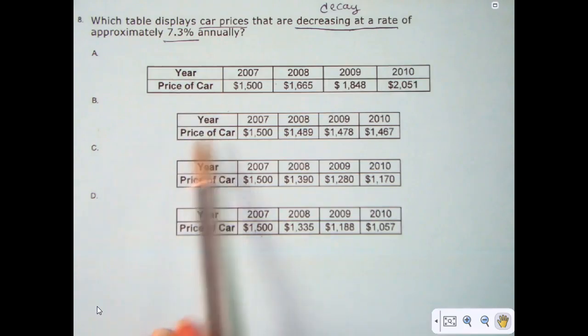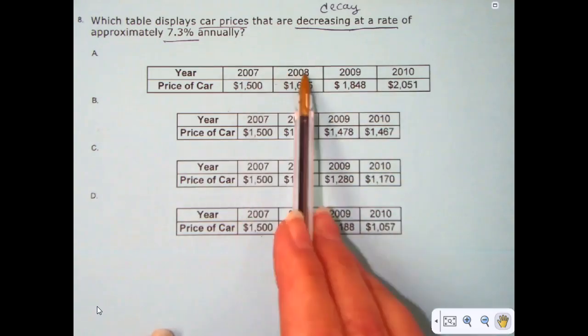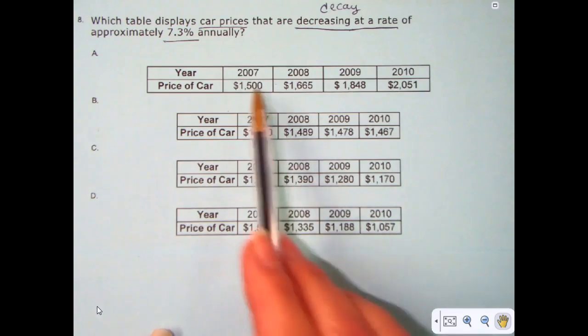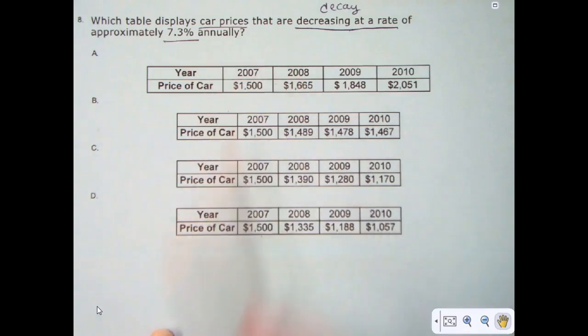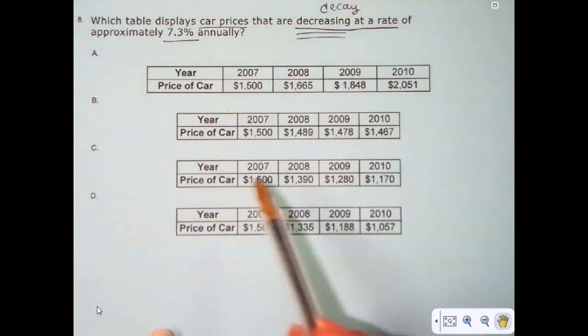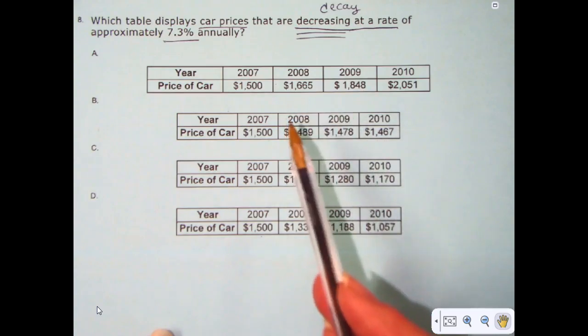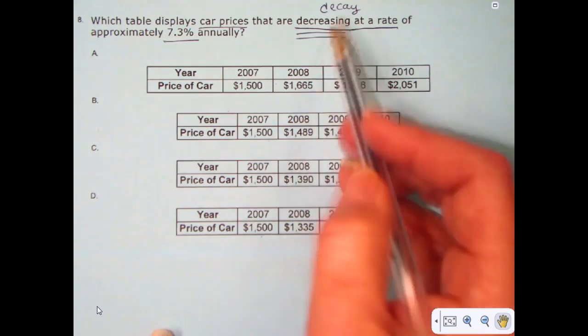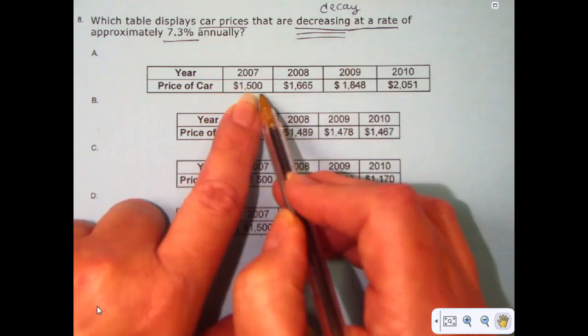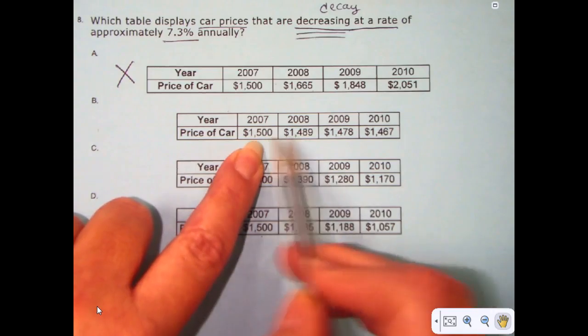Now if you glance at what we're looking at here, we have four tables with the year and the price of the car as the values. All of the tables have from 2007 to 2010 and then we have prices for each of those years. Now the first thing I want to do is see if there are any that aren't decreasing. If there are any of these tables where the price is increasing over time, then it can't be the right answer. If I look at the first one, it actually increased from 1,500 to 1,665. So A is not an answer.